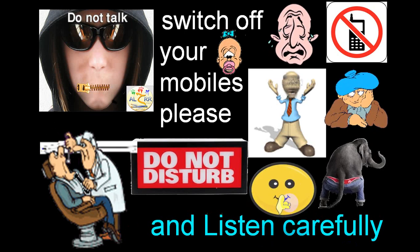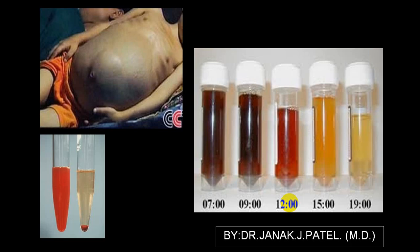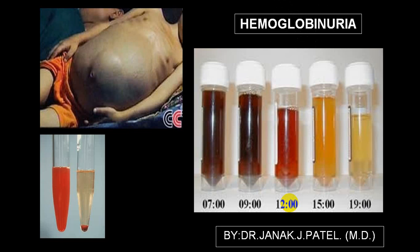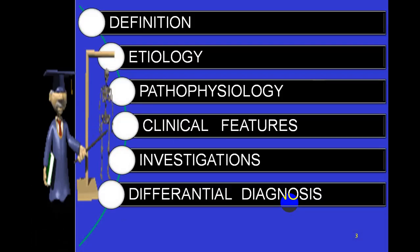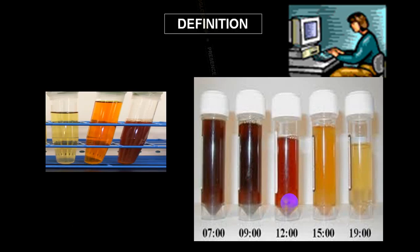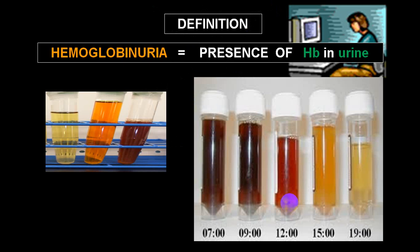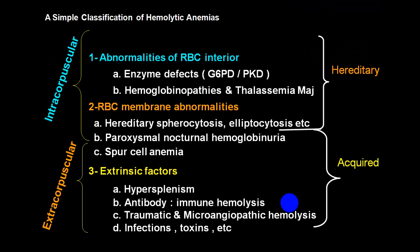Today we are going to talk about another topic we call hemoglobinuria — meaning free hemoglobin present in urine. Hemoglobin is normally present inside the RBC, but when RBC is hemolyzed, hemoglobin will appear in blood — we call it hemoglobinemia — and that hemoglobin will be filtered at the glomerular level and appear in urine, which we call hemoglobinuria.